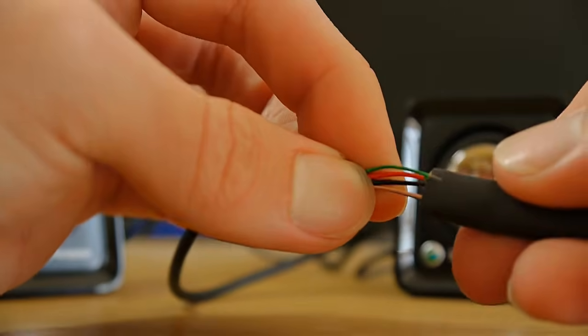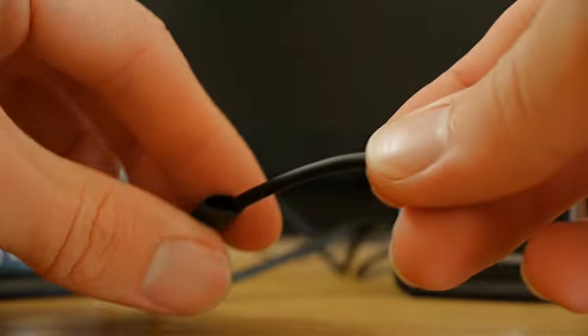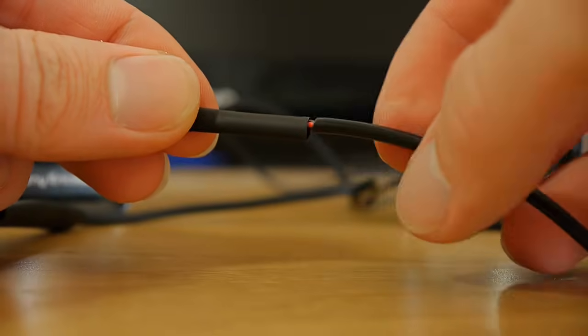Cut a longish length of heat shrink and thread it onto the input cable. Don't forget this step as you can't add it later. Do this also for the USB cable.